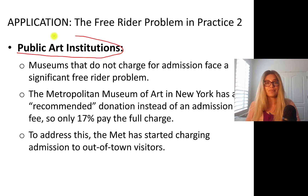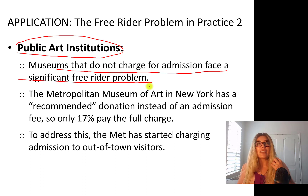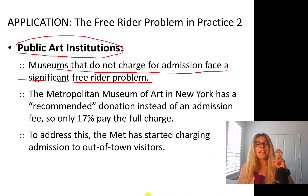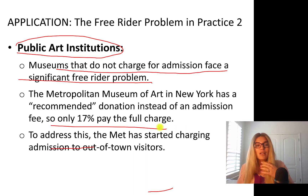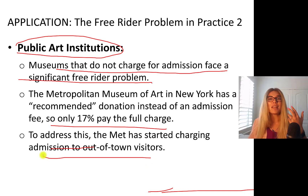Another example: public art institutions. Museums that do not charge for admission face a significant free rider problem. For instance, in Corpus Christi we have the Art Museum of Corpus Christi — they have some free days, and for a period HEB paid for all admissions, which is private provision of a public good. The Metropolitan Museum of Art in New York had a recommended donation instead of an admission fee, but only 17% paid the full charge. To address this, the Met started charging admissions to out-of-town visitors, who make up the majority of tourists.